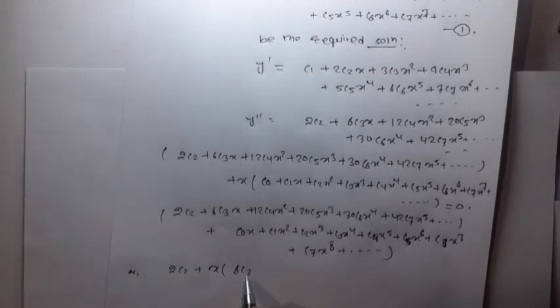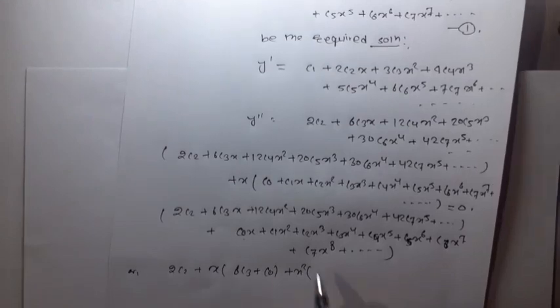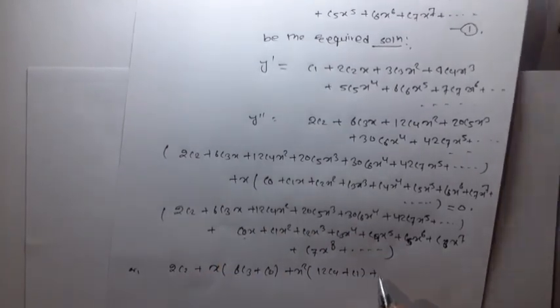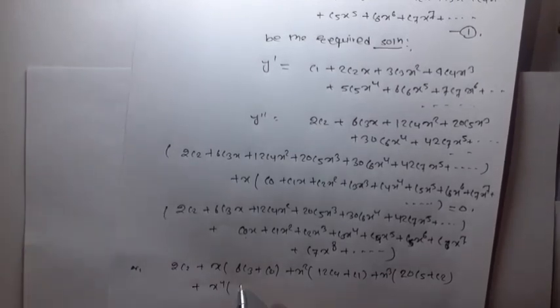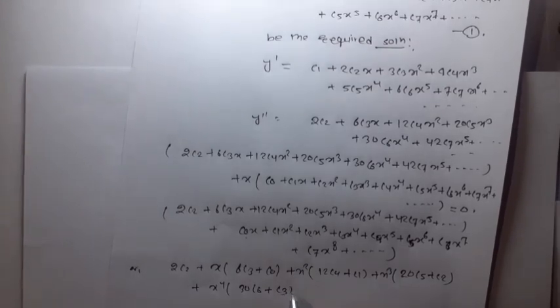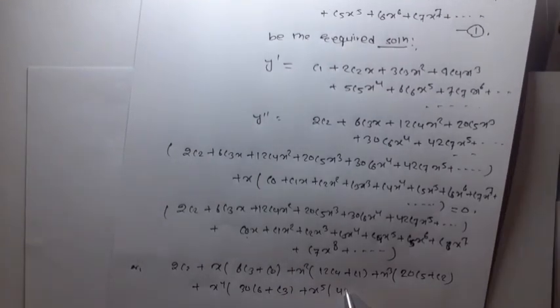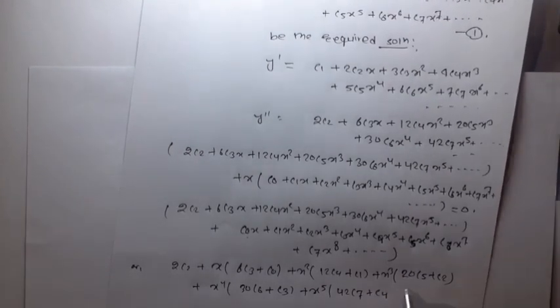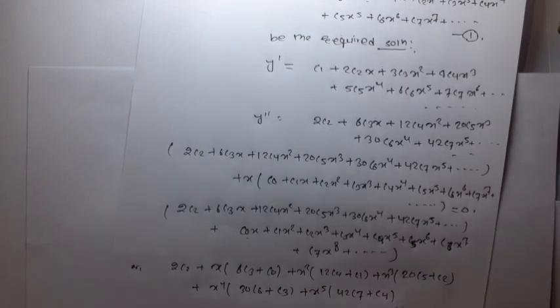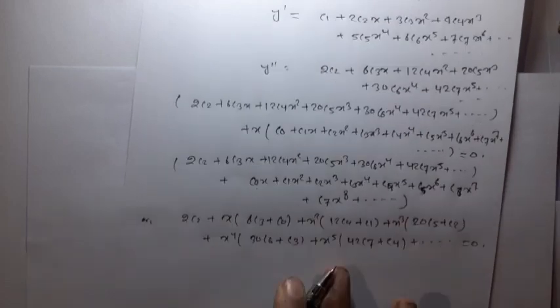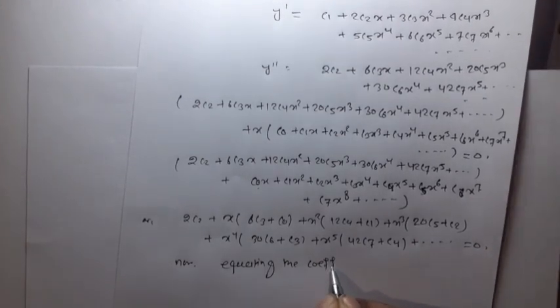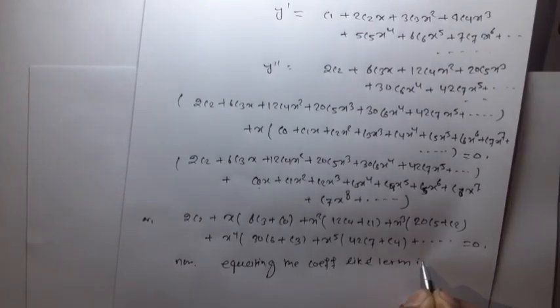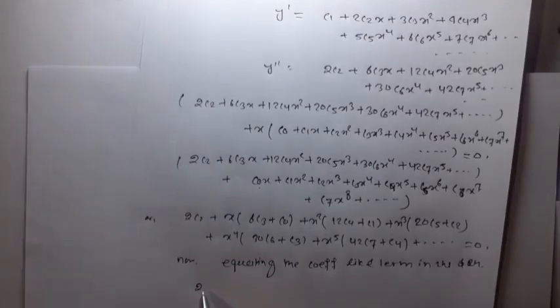Grouping by powers of x: 2c2 plus x(6c3 plus c0) plus x squared(12c4 plus c1) plus x cubed(20c5 plus c2) plus x to the 4th(30c6 plus c3) plus x to the 5th(42c7 plus c4) plus dot dot dot equals zero. Now equating the coefficients of like terms in LHS and RHS.